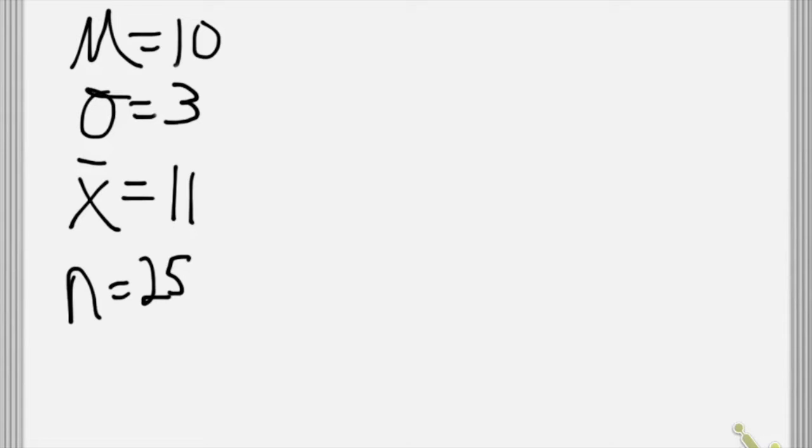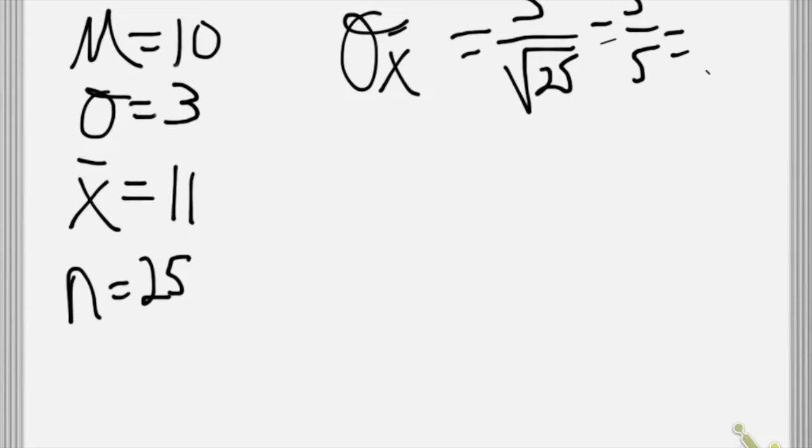So we're going to first calculate the standard error of the mean. It's going to be 3, which is the standard deviation, divided by the square root of the sample size, which is going to be 3 over 5, which is 0.6.